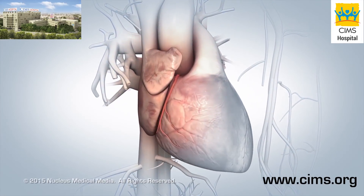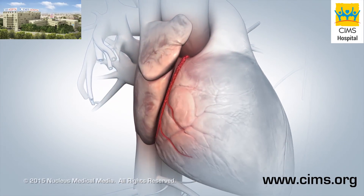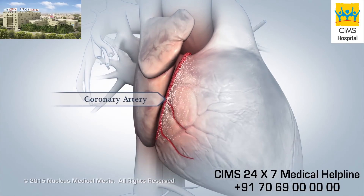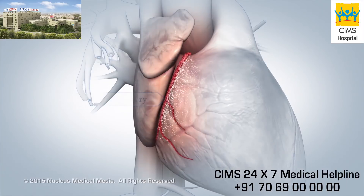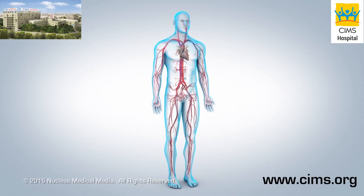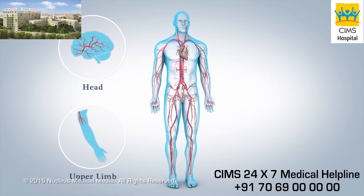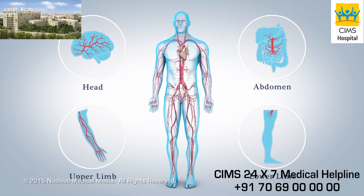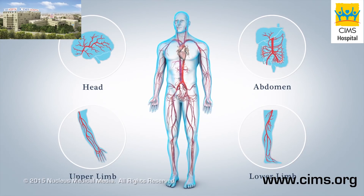The first branches off your aorta are the coronary arteries, which supply your heart muscle with oxygen and nutrients. At the top of your aorta, arteries branch off to carry blood to your head and arms. Arteries branching from the middle and lower parts of your aorta supply blood to the rest of your body.